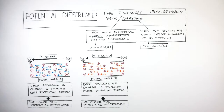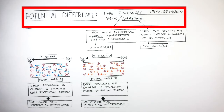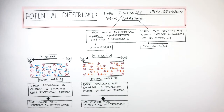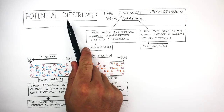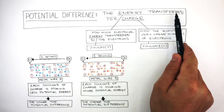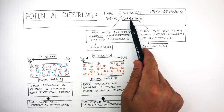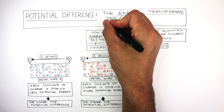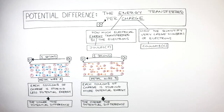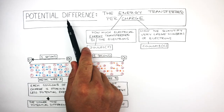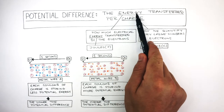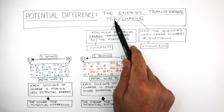It's really important you learn and understand this definition of potential difference, as it will help you to remember the equation very easily. Potential difference is the energy transferred per charge. So if you ever see the word 'per' in any definition, this means divide. So using this definition to calculate potential difference, it is energy transferred divided by charge.